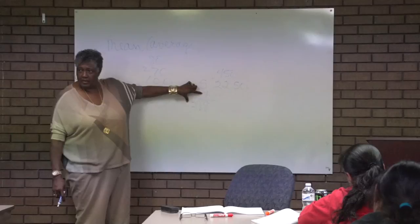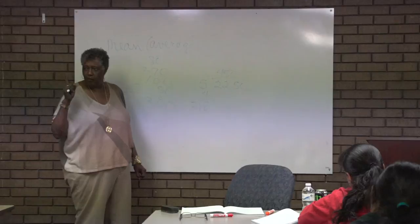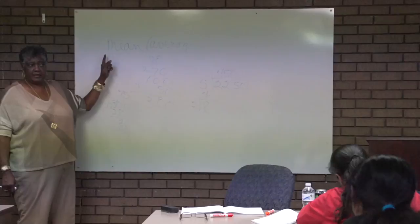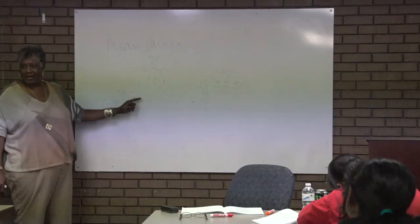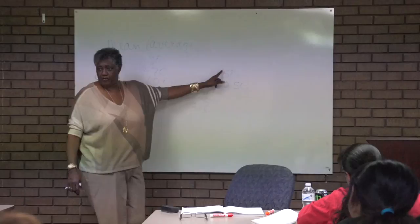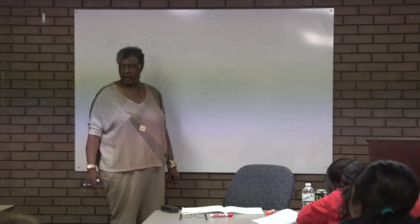If you only have one thing missing, you can figure it out. What we expect is that every time they ask for an average, they'll give us all the numbers and we add them up and divide. But sometimes they'll give us the average, tell us how many people, and ask questions about it. For instance, let's say there were five boys and their average weight was 160.